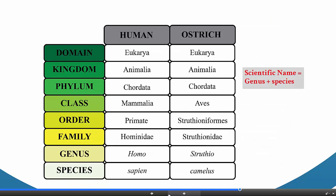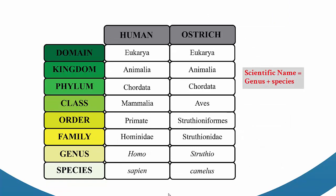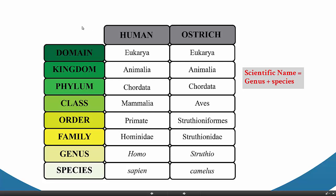A scientific name is actually a representation of the classification of a species. When a species has been described and given a scientific name, that means it's been placed in the entire classification scheme — someone has figured out right where it fits.